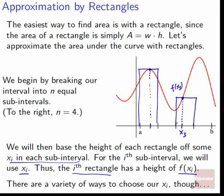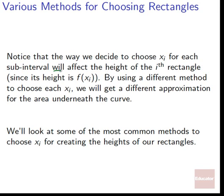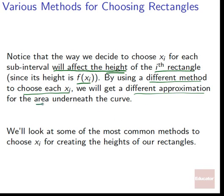There are a variety of ways to choose our xi. In any given subinterval there are infinitely many different locations we could pick. The way we decide to choose our xi determines the height of the i-th rectangle, since height is f evaluated at whatever horizontal reference location we chose. By using a different method to choose our xi, we get a different approximation for the area. We'll now look at the most common methods to choose xi for creating the heights of our rectangles.